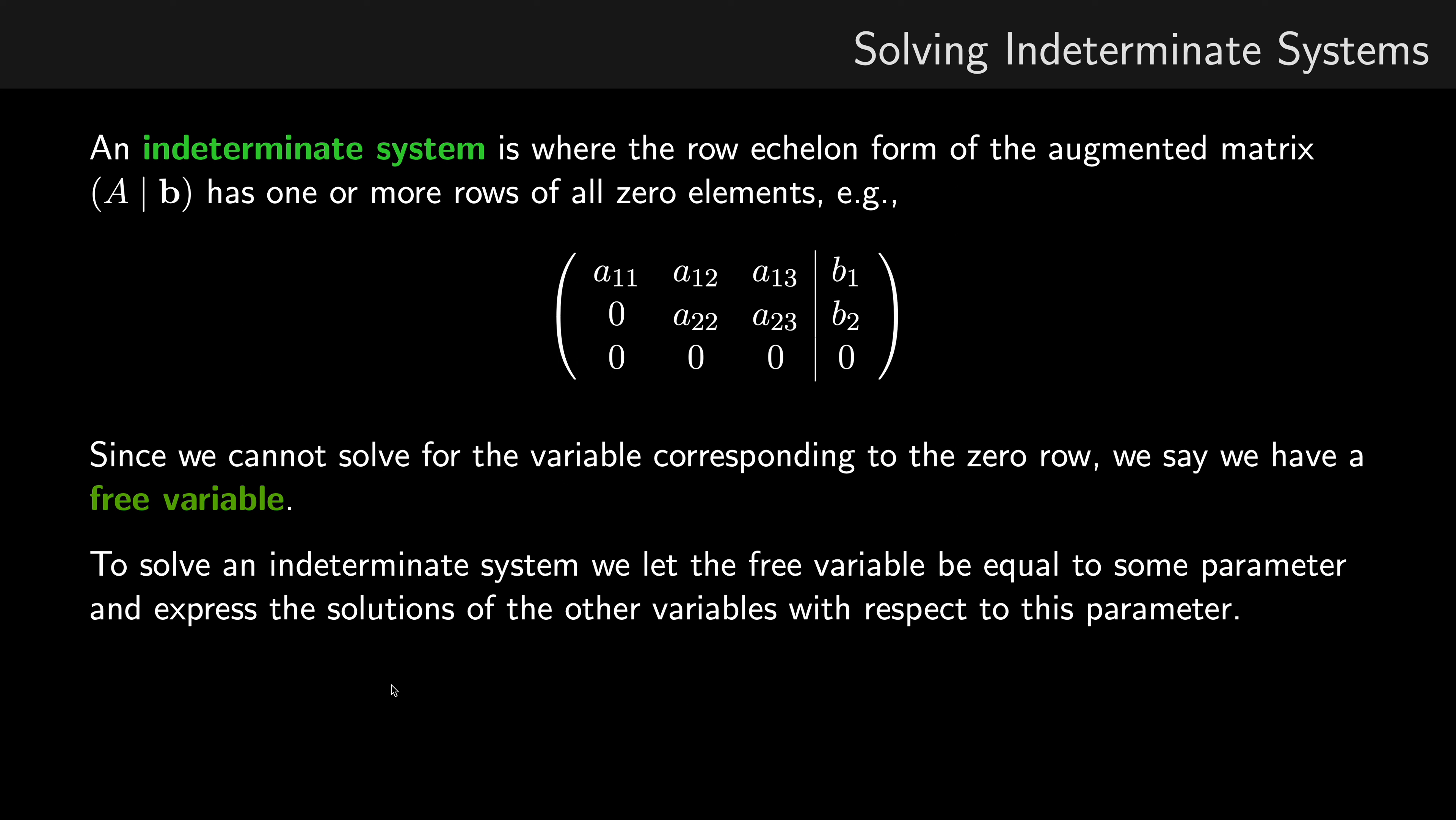Let's talk about solving indeterminate systems. An indeterminate system is where the row echelon form of the augmented matrix A|b has one or more rows of all zero elements.